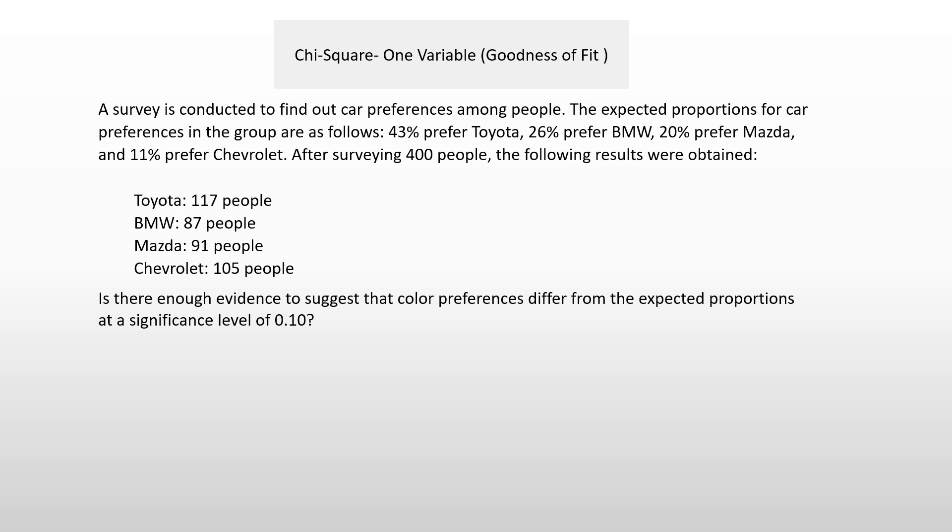The actual observed values they got were: 117 people preferred Toyota, 87 preferred BMW, and so on. The question is: is there enough evidence that the expected proportions are different from the observed? You're asking whether there is any significant evidence that the expected proportions differ from the observed — for example, to test if really 43% of people prefer Toyota — and to see if that has statistical significance.